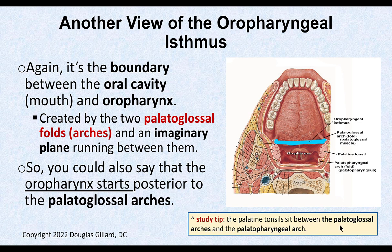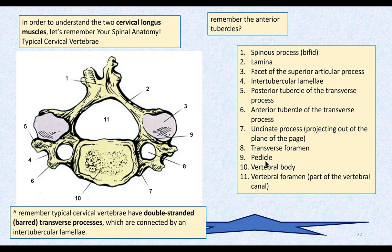Study tip: palatine tonsils sit between the palatoglossal arches and the palatopharyngeal arches. Now we're in some familiar territory — you've had osteology of the spine. What's number six on this cervical vertebra? Anterior tubercle. Number five? Posterior tubercle. What's the piece between? Intertubercular lamellae — in between the tubercles. Weird transverse process, right? In typical cervicals, they're double-strutted transverse processes on all normal cervical vertebrae, with tubercles at the end of those bars.